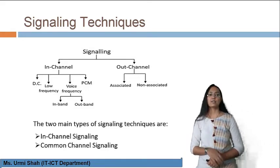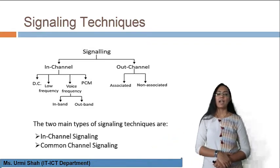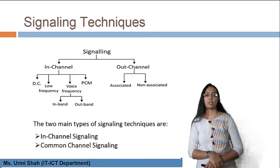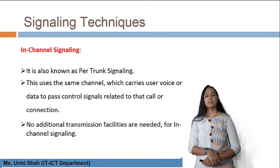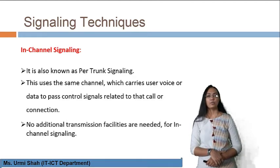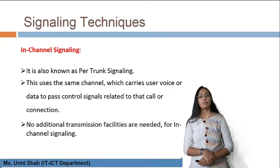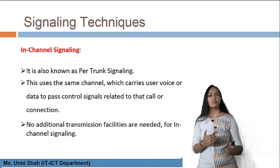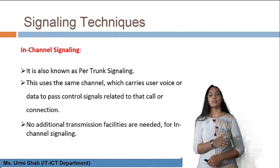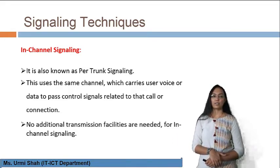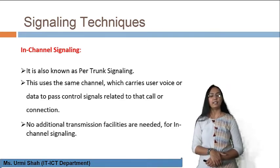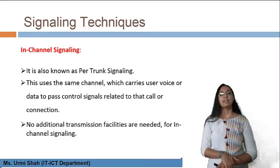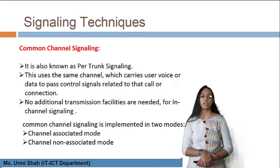The two main types of signaling techniques are in-channel signaling and common channel signaling. In-channel signaling is also known as per-trunk signaling. It uses the same channel that carries user voice or data to pass control signals related to the call or connection. No additional transmission facilities are needed for in-channel signaling, making it a widely used technique in telecommunication networks.